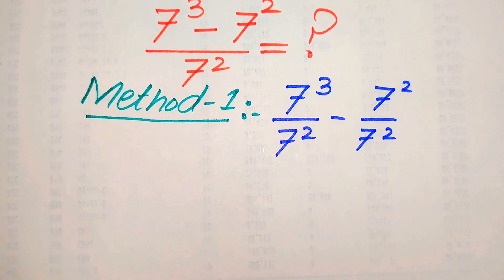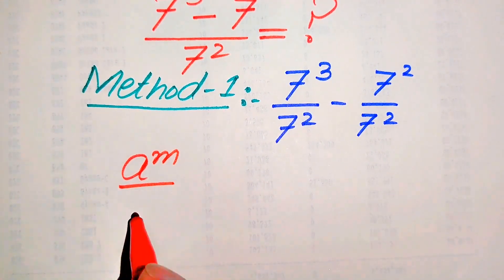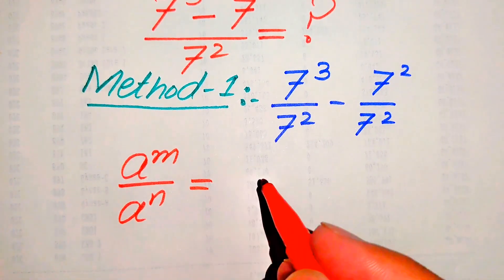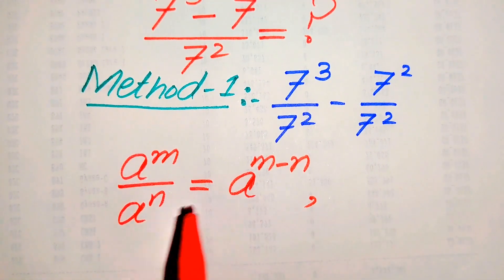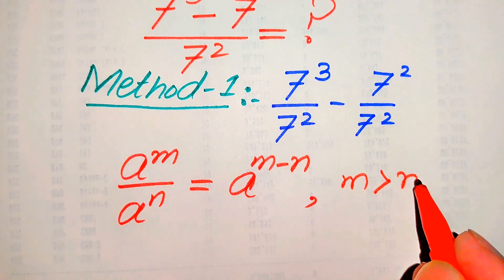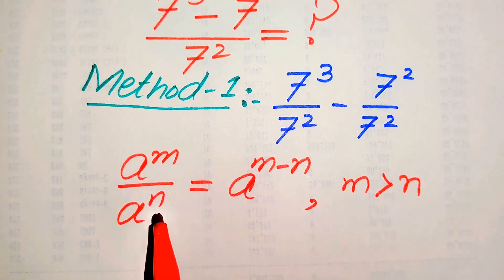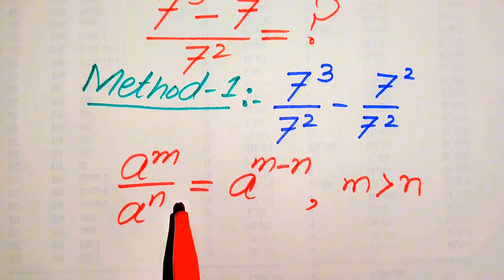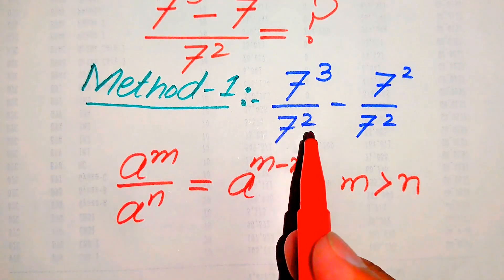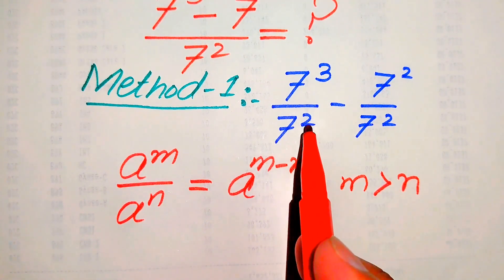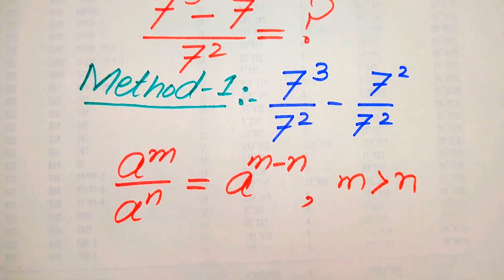In the first method we use the fractional exponent law. We know that a to the power of m divided by a to the power of n equals a to the power of m minus n. We can do this subtraction only when m is greater than or equal to n. Comparing 3 and 2, since 2 is the lowest exponent, we move 2 towards 3 and apply this exponent law.